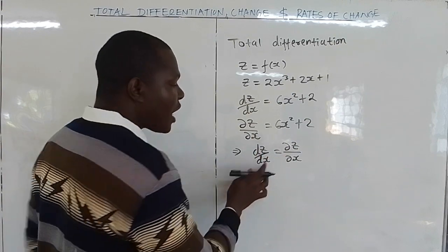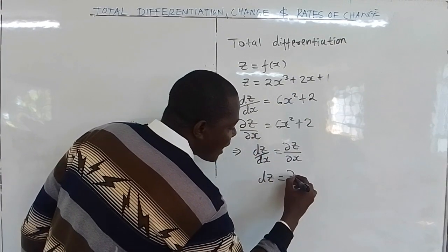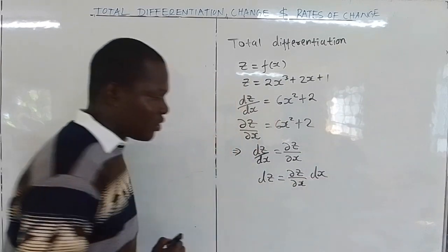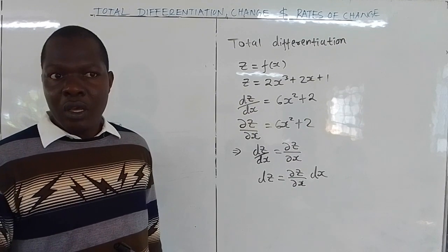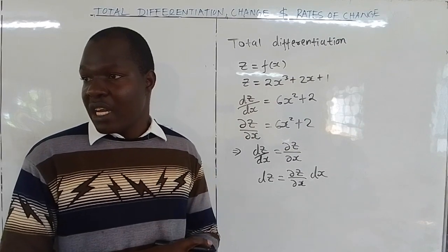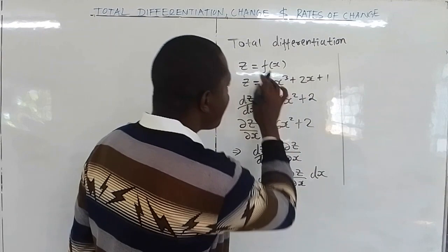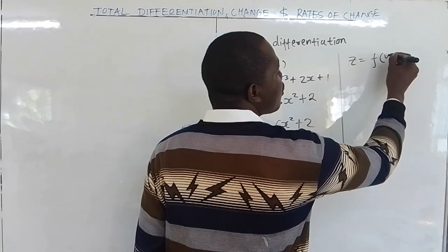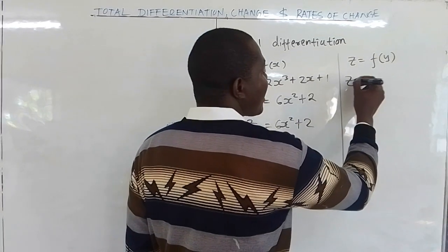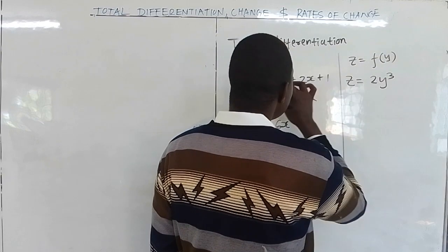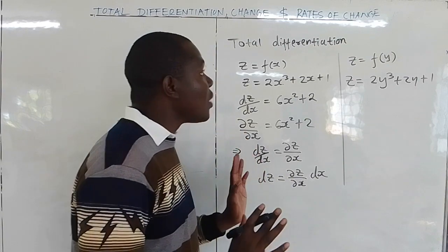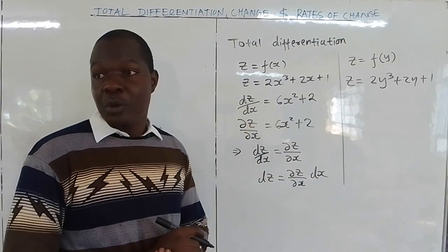If you make dz the subject, you get dz = (∂z/∂x)dx. When there is a single variable, the ordinary derivative is the same as the partial derivative because we have only one variable. On the other side, we have the case when z is a function of y only — for example, z = 2y cubed plus 2y plus 1. We use this as an example to define the concept of total differentiation.